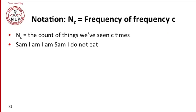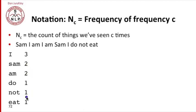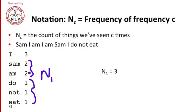Take the little sentence: 'Sam I am, I am Sam, I do not eat.' Looking at unigram counts: 'I' occurs three times, 'Sam' occurs twice, and 'do', 'not', and 'eat' each occur once. So N_1 — how many things occur one time? There are three of them, so N_1 is 3. How many things occur two times? There are two of those, so N_2 is 2. Things that occur three times? Only one, so N_3 is 1.